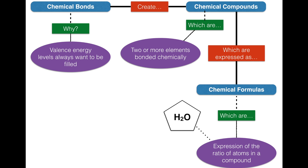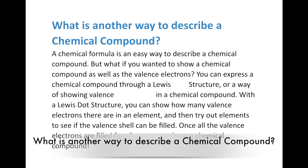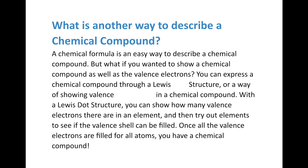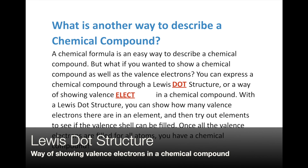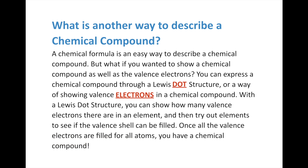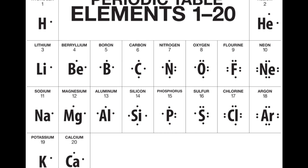Now let's move into the final part of this lesson — another way to describe chemical compounds. What if you want to talk about the valence electrons? You can use what we call a Lewis dot structure, which is a way of showing valence electrons in a chemical compound. With a Lewis dot structure, you can show how many valence electrons an element has, and then figure out the elements by counting the dots to fill it up. Once all valence electrons are filled for all atoms, you have a chemical compound that actually works. Let's look at the first 20 elements on the periodic table and see it in action.